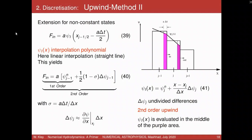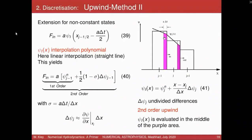For the interpolation polynomial, we have the value at the point plus (x minus x_j)/delta_x times the slope at the corner — that edge point. Psi(x) is evaluated in the middle of the purple area; we evaluate the function psi there and get this expression. Note that sigma here is delta_t divided by delta_x, and this moves us to the middle of that purple volume.